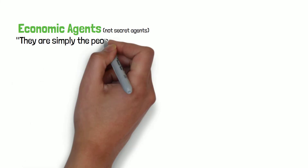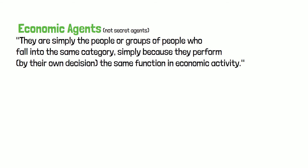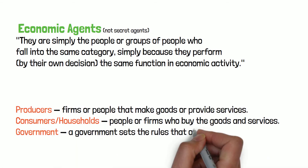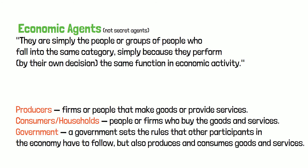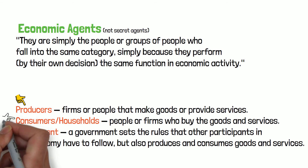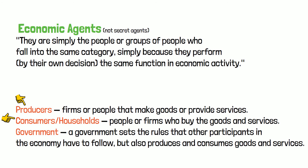Economic agents — what is this? They are simply the people or groups of people who fall into the same category because they perform, by their own decision, the same function in economic activity. These agents can usually be thought of as producers — firms or people that make goods or provide services; consumers or households — people or firms who buy the goods and services; and the government, which sets the rules that other participants in the economy have to follow, while also producing and consuming goods and services. Each of these economic agents has to make decisions that affect how resources are allocated. Producers decide what to make and how much they're willing to sell it for; consumers decide what they want to buy and how much they're willing to pay; and governments decide how much to intervene in the way producers and consumers act.